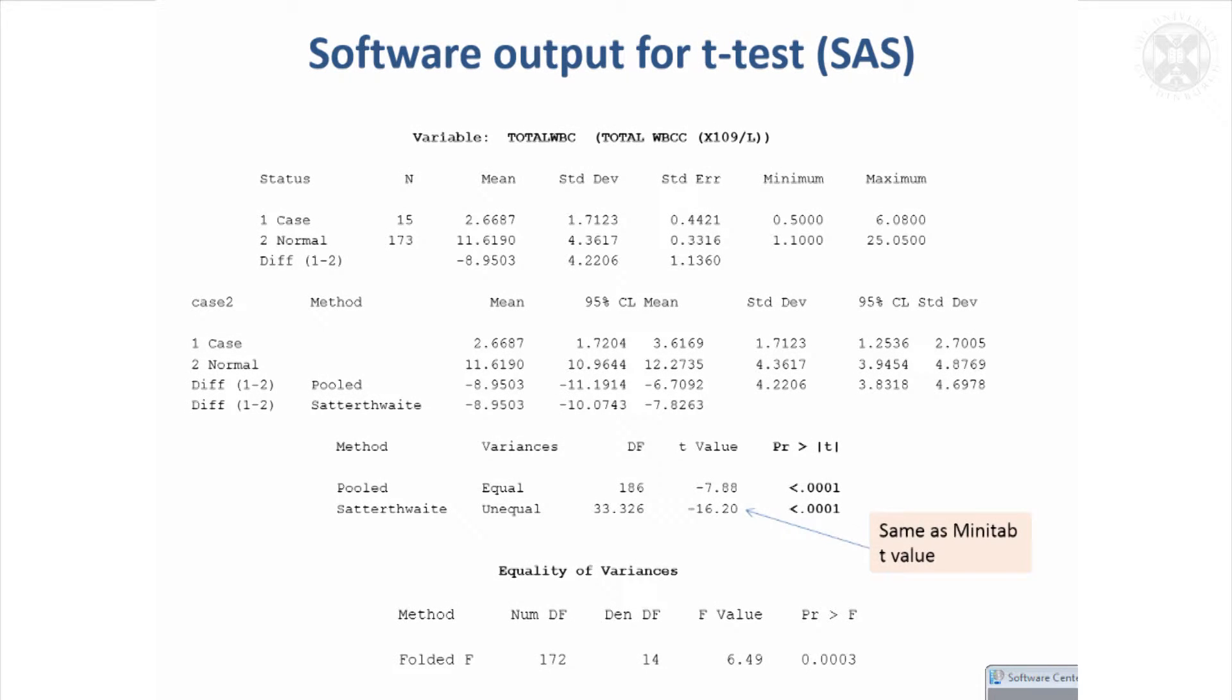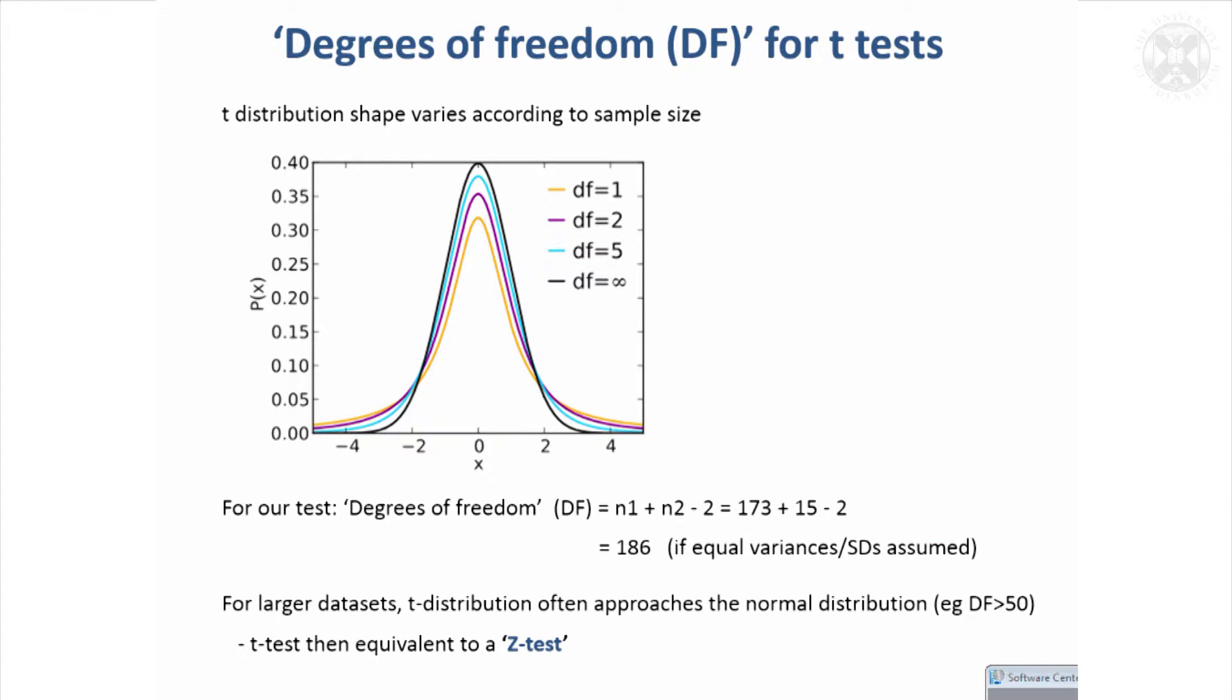One thing you might have wondered about is this degrees of freedom that pops up in the output. That relates to the T distribution and the fact that given the size of your data set, the distribution is going to be slightly different, have a slightly different shape.